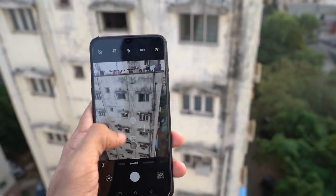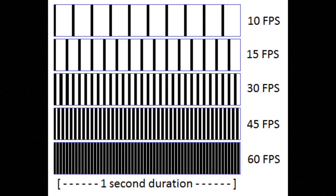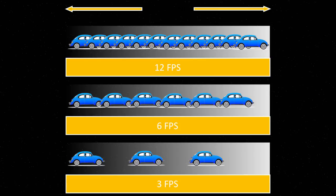FPS, or frames per second — a video is made up of multiple photos called frames. In a 60 FPS video, every second has 60 images; in a 30 FPS video, there are 30 images per second. As the number of frames goes up, the video looks smoother. The most common values for regular usage are 24 FPS, 30 FPS, and 60 FPS.